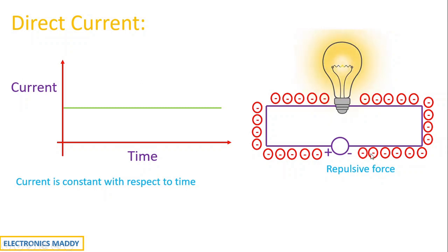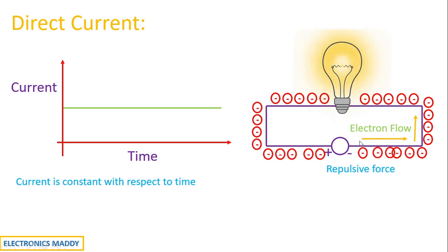Consequently, that electron gains some energy and hits the next adjacent electron, and the process repeats throughout. The final electron gains sufficient energy and gets attracted towards the positive polarity of the supply. So the direction of electron flow is from the negative terminal to the positive terminal — in only one direction in the case of direct current.